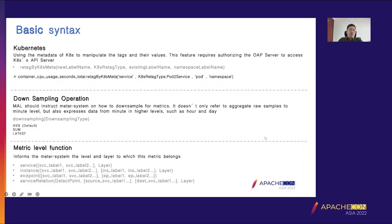The Kubernetes-related function uses the metadata of Kubernetes to manipulate targets and their values. This requires authorizing the SkyWalking OAP server to access the Kubernetes API server. The function 'retagged by Kubernetes meta' is used to find the service and retag metrics by the given pod information through the Kubernetes metadata.